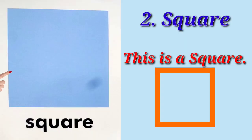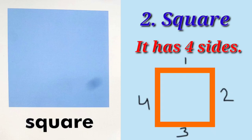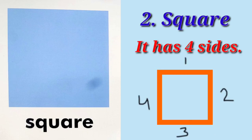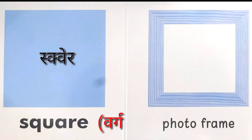Square. This is a square. It has four sides. All its sides are equal. Square means work. A photo frame is square shaped.